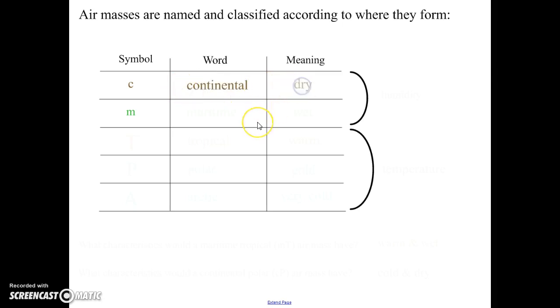The c stands for continental, which means dry. So a continental air mass was hanging out over a continent for a long period of time, so it's going to be dry.